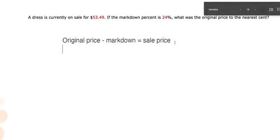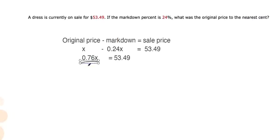So we can plug some information in here. We don't know what the original price is, so let's call that X. And then the markdown amount is, they're saying it's 24% of the original price. So that's 0.24 times X. Because that's how you calculate 24% of a number. And that equals the sales price, $53.49. So if you've got 1X subtracted by 0.24X and 0.76X, that equals $53.49. So to finish getting X by itself, you've got to divide 0.76 from both sides.